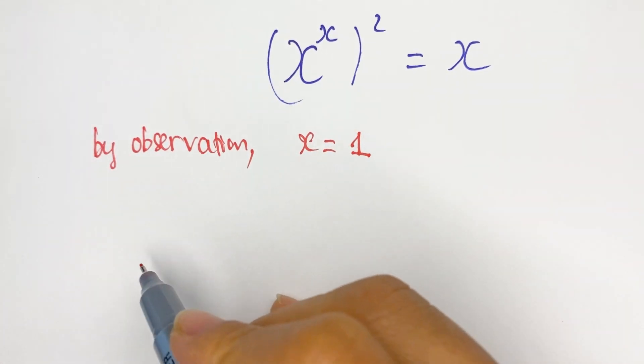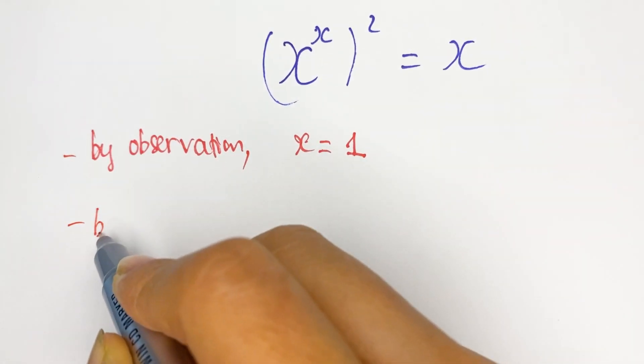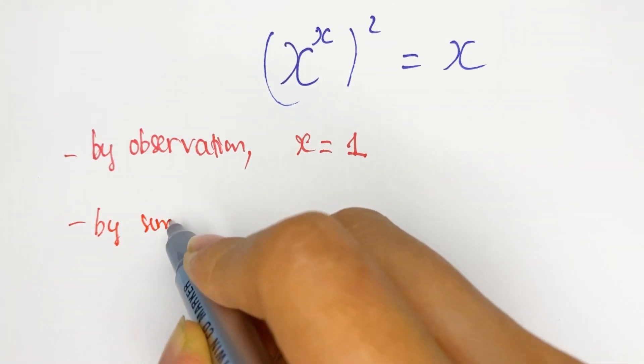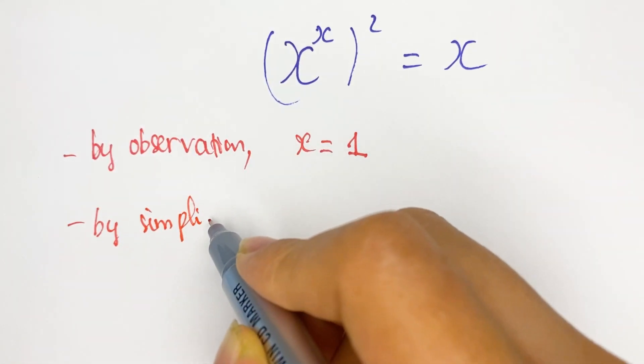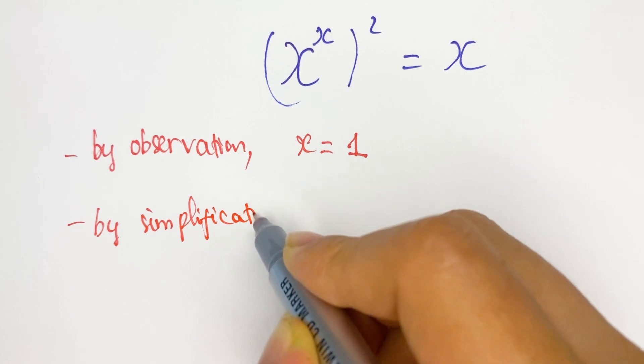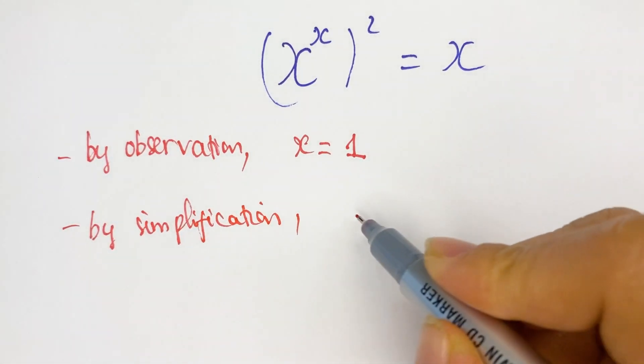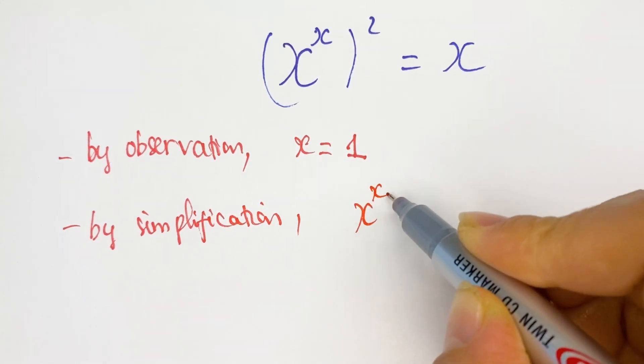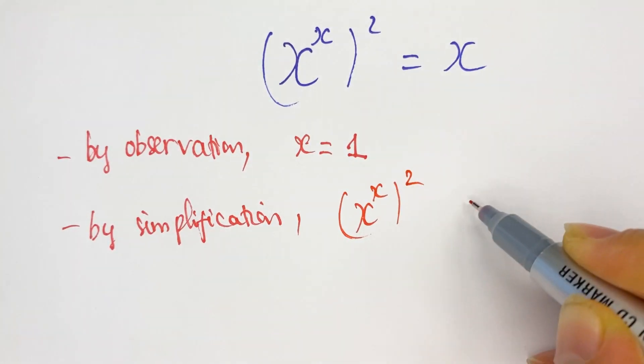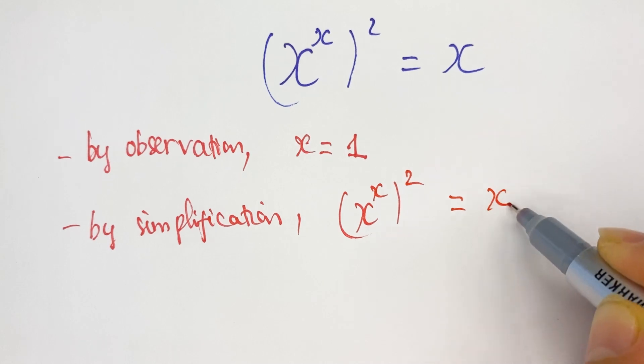Secondly, we have by simplification we can get the other solution too. You can see (x^x)^2 equals x.